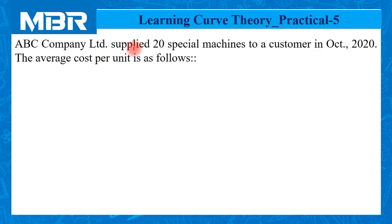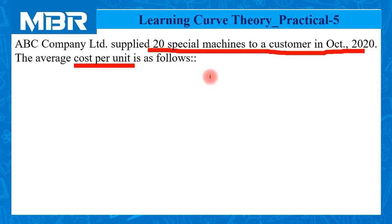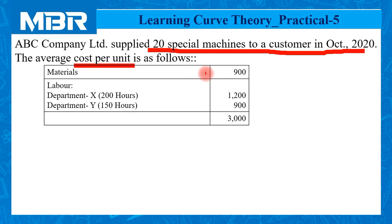ABC Company Limited supplied 20 special machines to a customer in October 2020. The average cost per unit is as follows. Materials: Rs. 900.